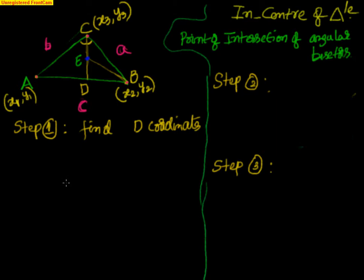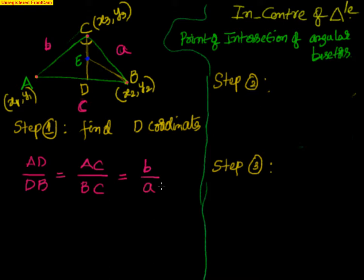Now we have to find the coordinates of D. You know the A coordinates, you know B, and you just need to find this ratio. With the angular bisector theorem, from C drawing an angular bisector divides AB in the ratio of AC to BC. So AD by DB equals AC by BC, which simplifies to B is to A. That is the ratio — B to A.